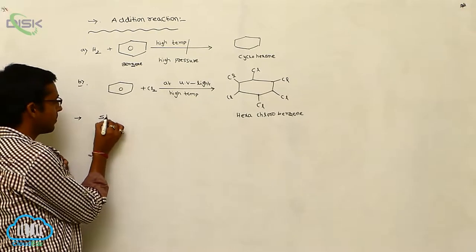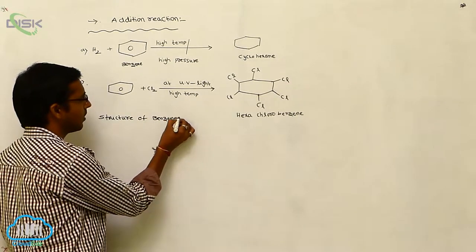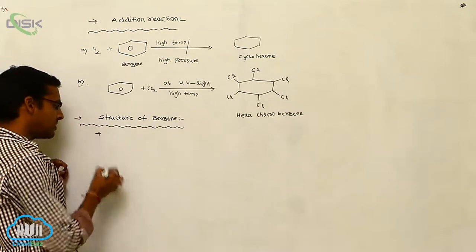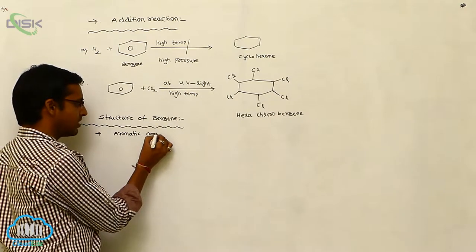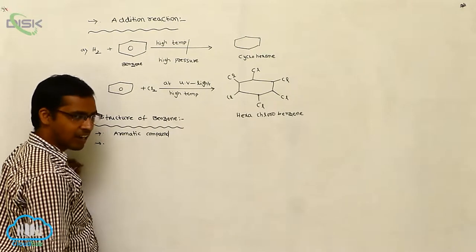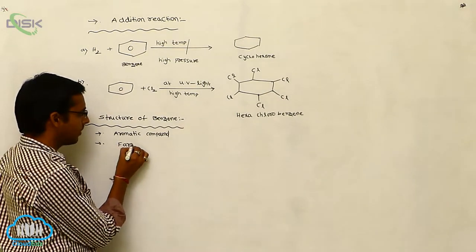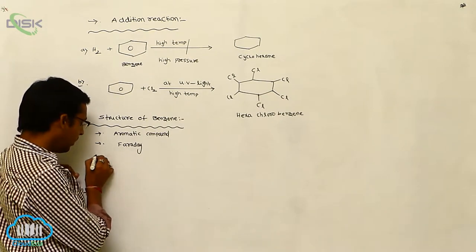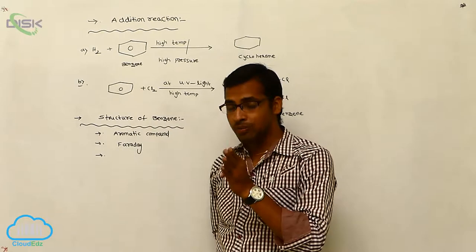Now we discuss the structure of benzene. Benzene is an aromatic, unsaturated organic compound. It was isolated by Michael Faraday. Being unsaturated, benzene contains double bonds within the ring and is involved in resonating structures.